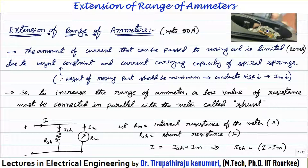Because of the current carrying capacity limitation of the spring, we cannot go beyond 20 milliamperes. But in practice we may need to measure large values of current. To extend the range of the ammeter, a low value of resistance must be connected in parallel with the milliammeter — that resistance is called the shunt resistor, or simply the shunt.